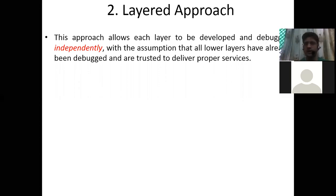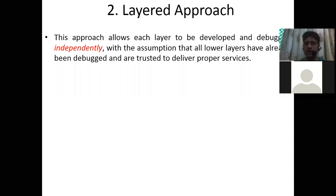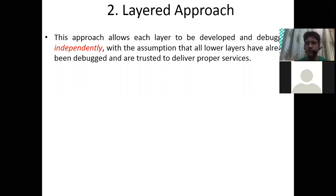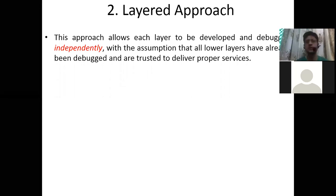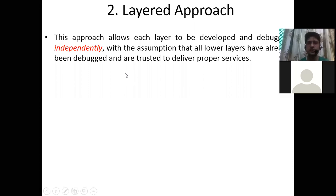The head of department and vice chancellor are forces having some specific services to provide — specific functionality and special powers. They can be trusted because they have the power in their hands to solve your problem. So this approach allows each layer to be developed and debugged independently, with the assumption that all lower layers have already been debugged and trusted to deliver proper services.